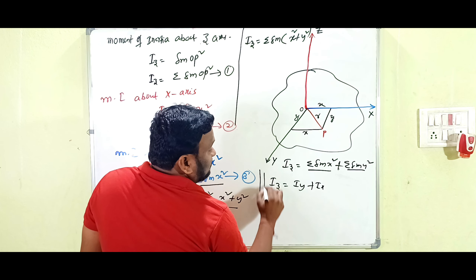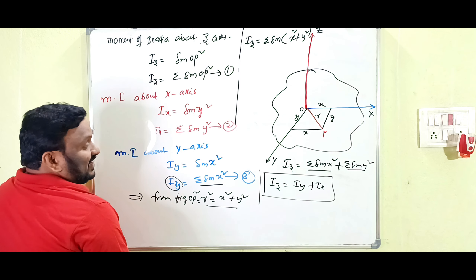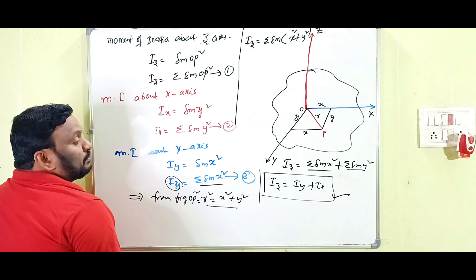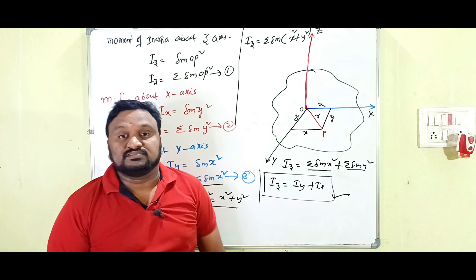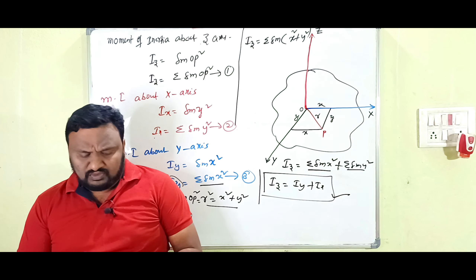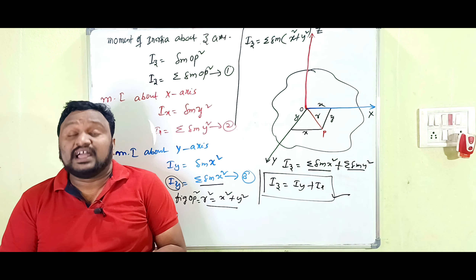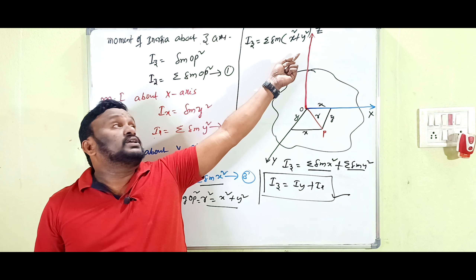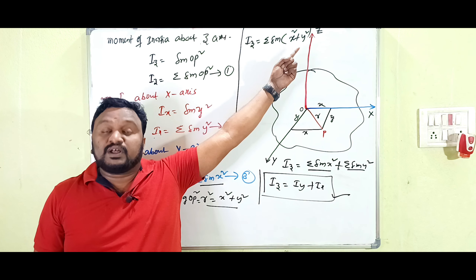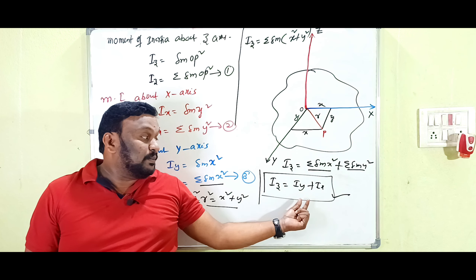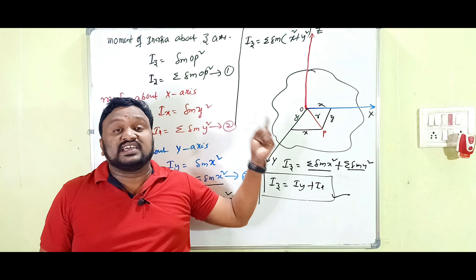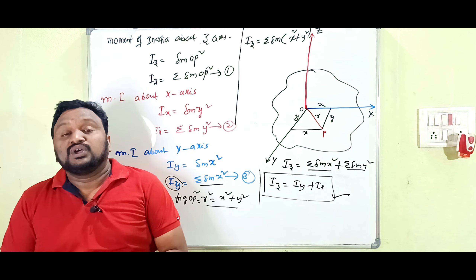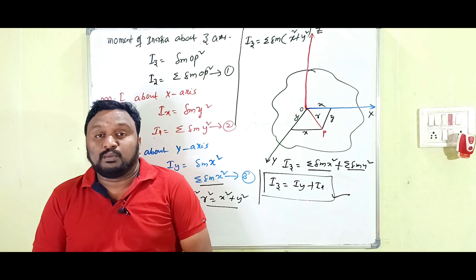Therefore, I_Z = I_Y + I_X. This is the perpendicular axis theorem. In this way, we have proved it: the moment of inertia about the Z-axis equals the sum of the moments of inertia about the two perpendicular axes X and Y. If you understand this, please like, share, and comment on the video.